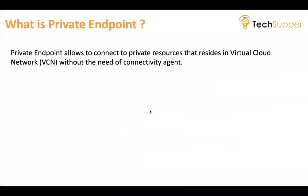Let's begin. What is a private endpoint? A private endpoint allows you to connect to private resources — resources which are not exposed over the internet, that you cannot access from the public internet directly, resources that are deployed in your private subnets. To deploy those private resources you must have a Virtual Cloud Network in Oracle Cloud Infrastructure and a subnet. Basically, a private endpoint gives you the flexibility to connect to your private resources without having the connectivity agent in place.